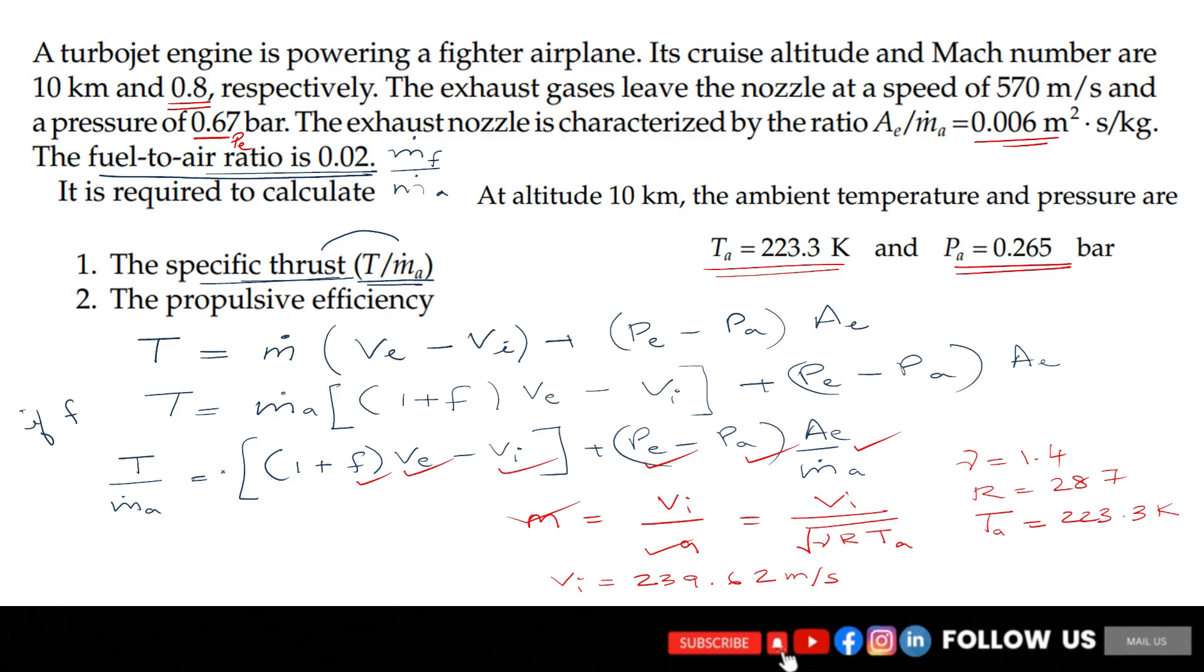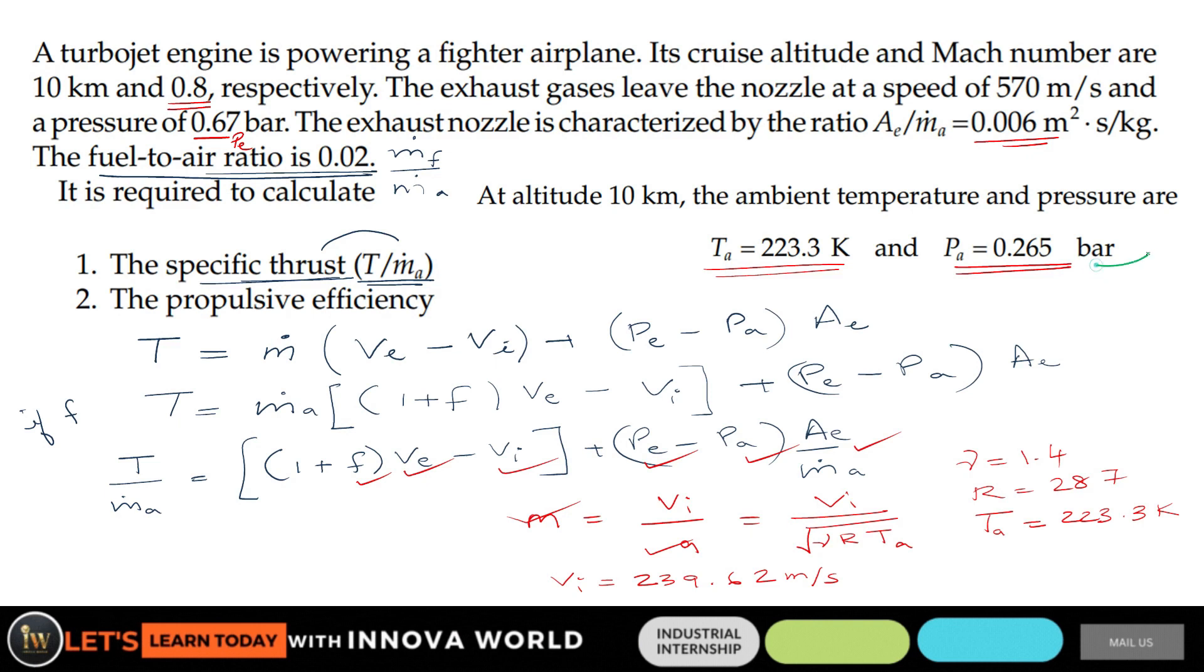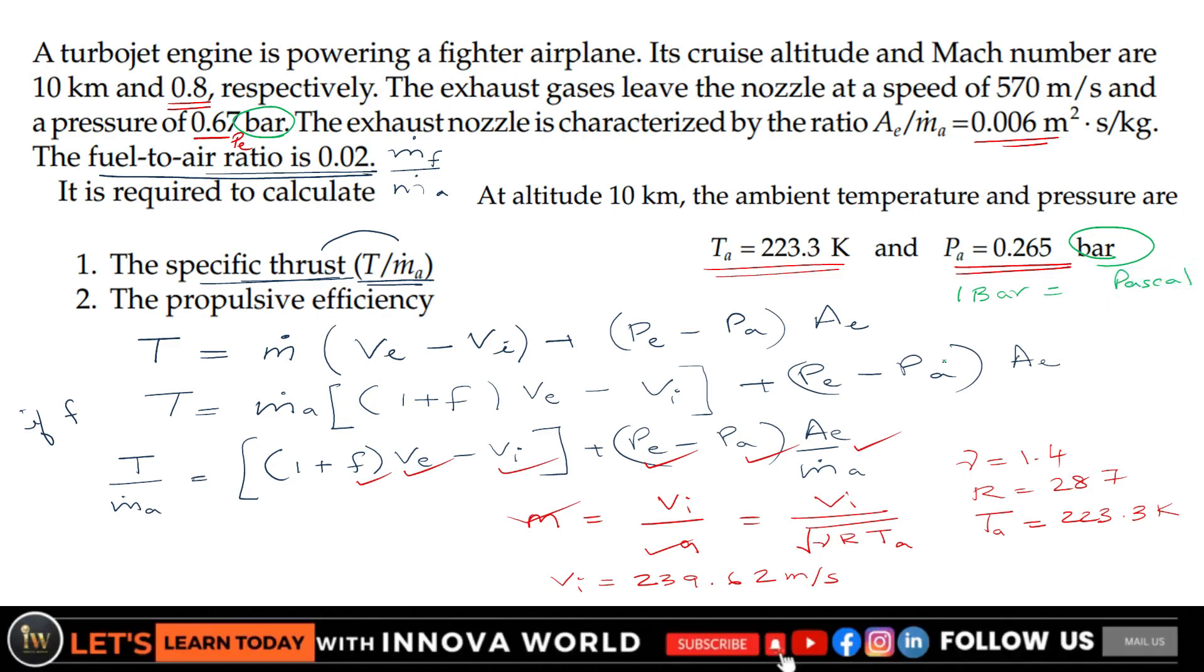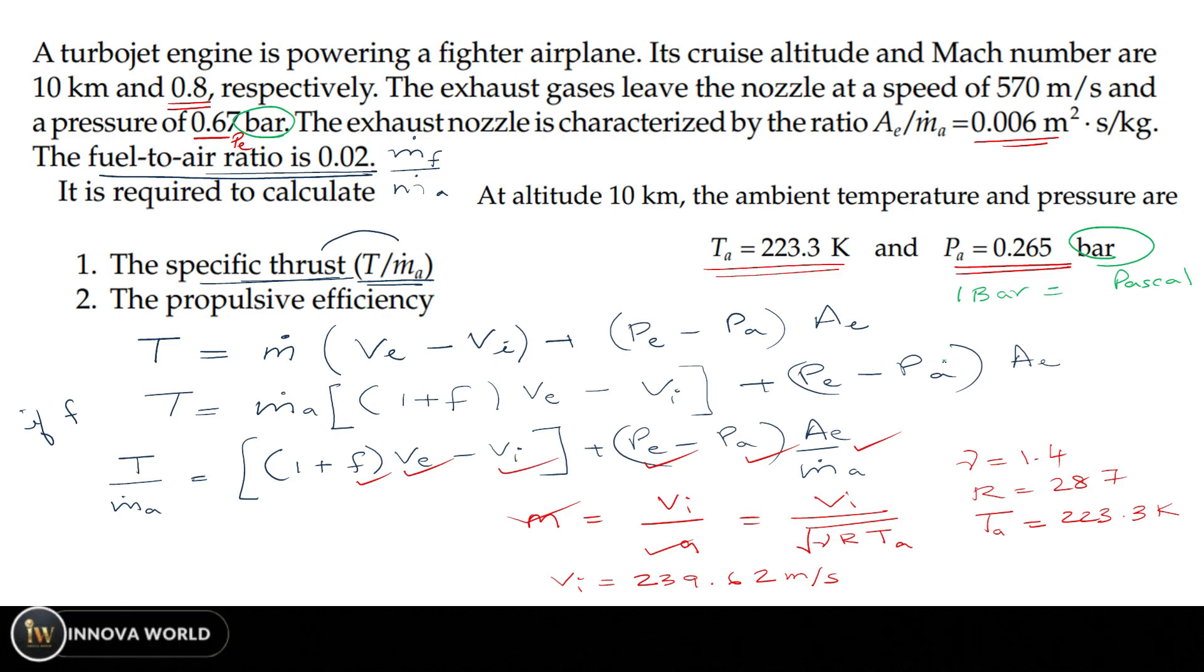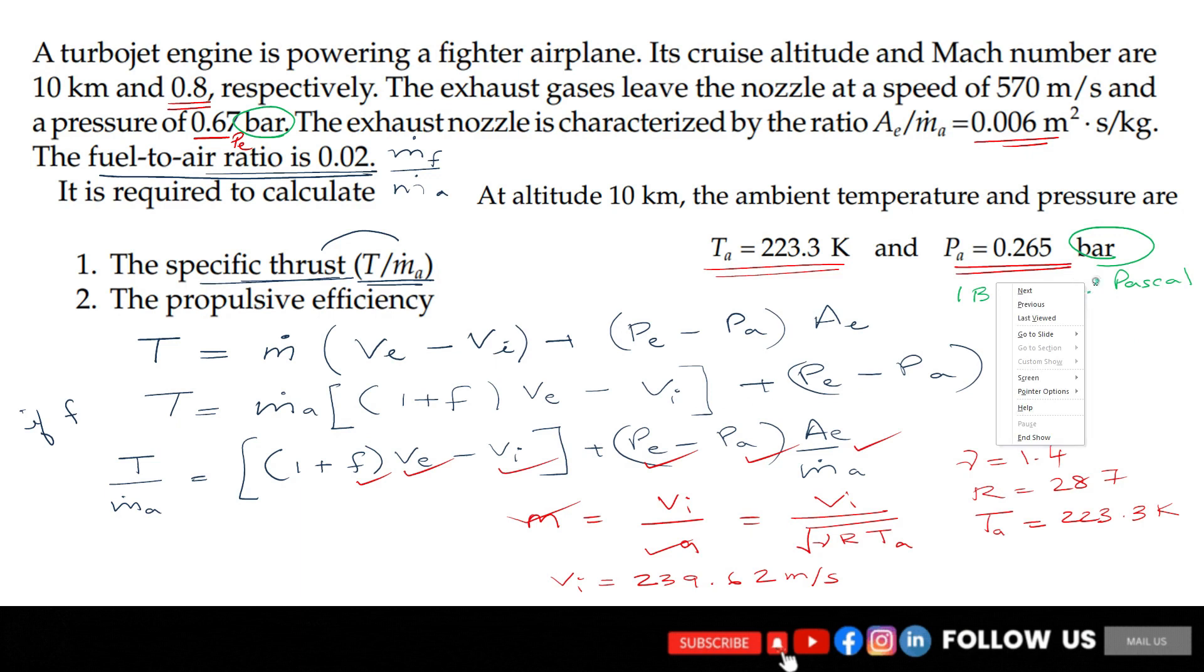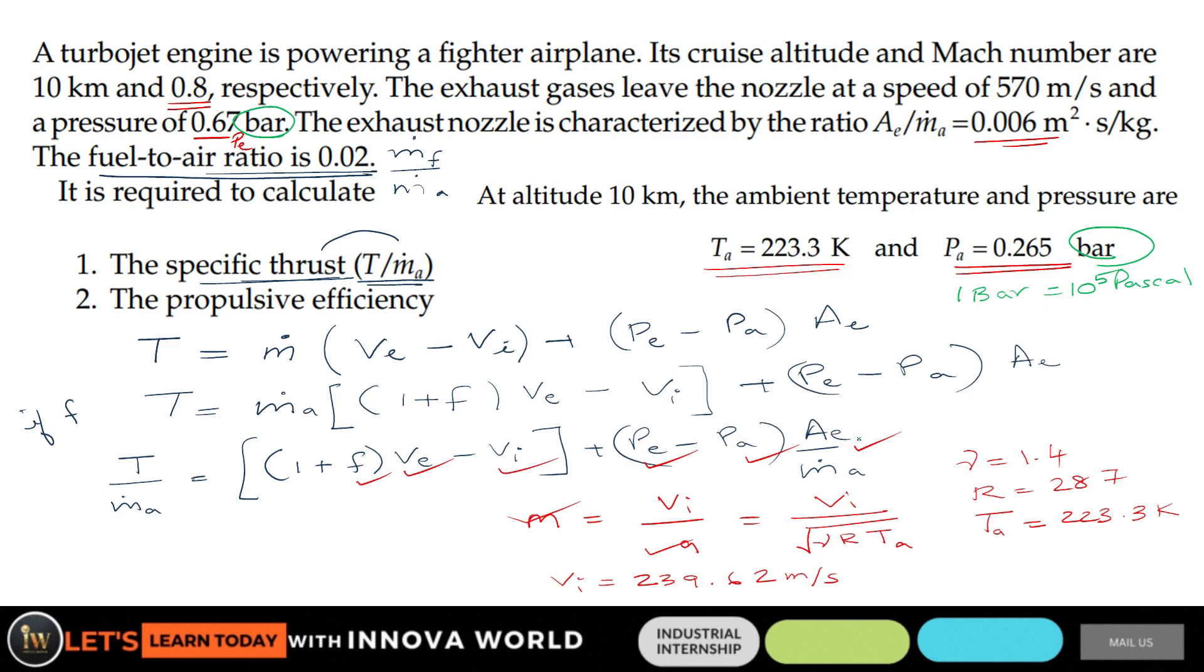Now substitute each and everything and you will get the answer. One more thing you might miss: the pressure is provided in terms of bar, so you need to convert that bar into pascal. Unit conversion is very important. One bar equals 10^5 pascal. Ensure you are multiplying by 10^5, otherwise you will get a different answer.